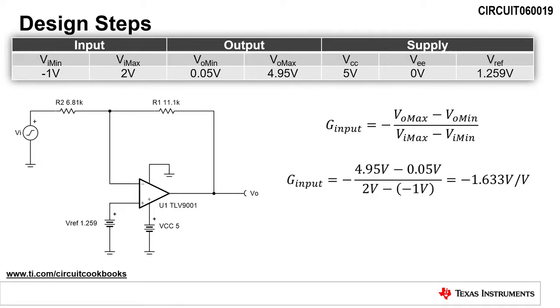The first design step is to calculate the gain of the input signal. The gain of the input signal, G_input, can be calculated by dividing the output voltage swing, V_O_max minus V_O_min, by the input voltage swing, V_I_max minus V_I_min. The required gain of the input signal is -1.633 V/V.